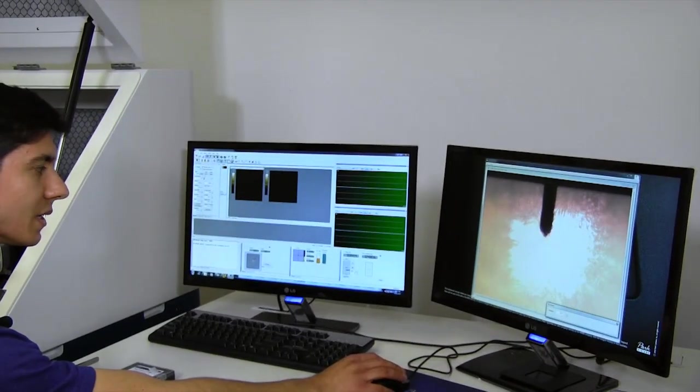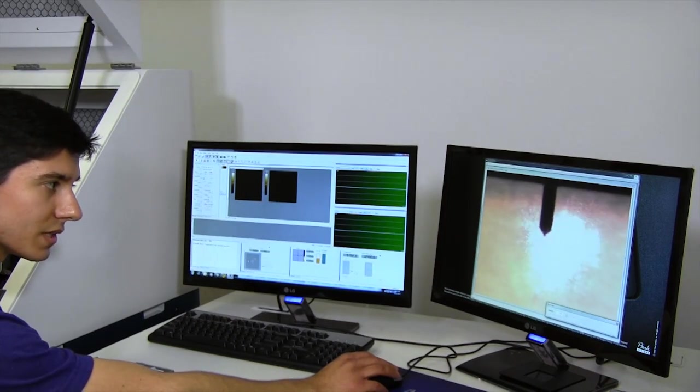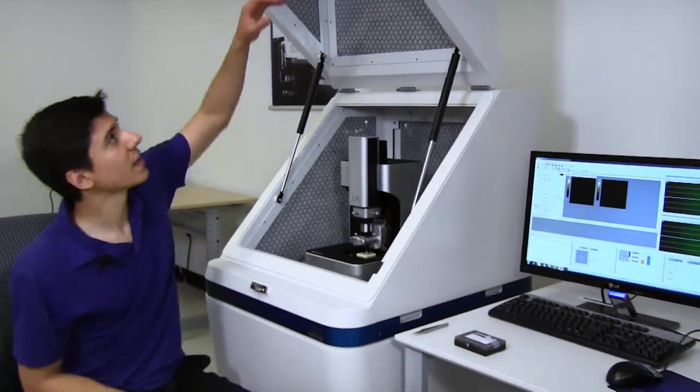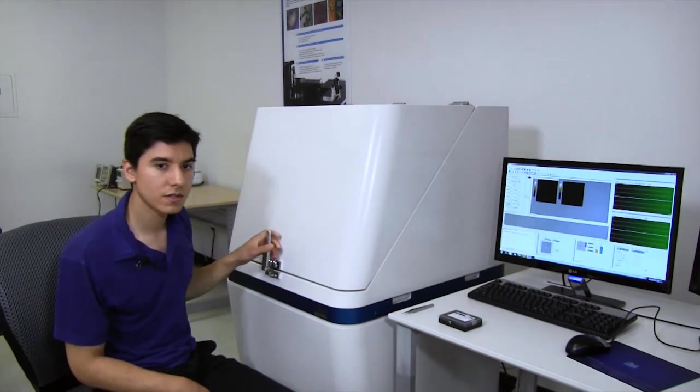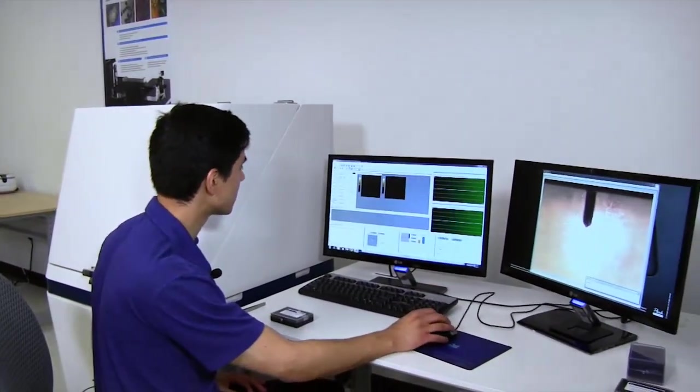Now the probe is getting close to the sample, so I can pan around and find a good place to scan. Once you've found a place to scan, close the door to the acoustic enclosure. Now I can do the rest of the control from the computer station.